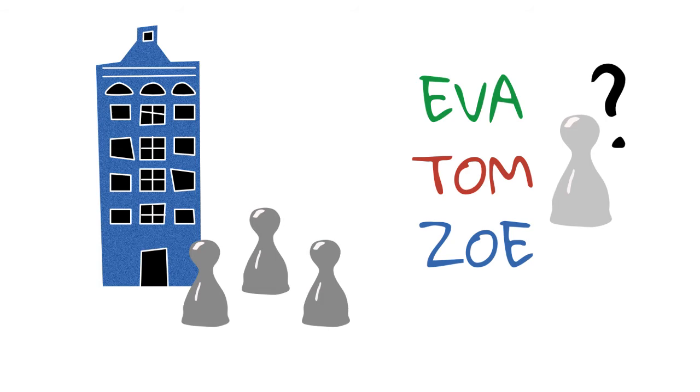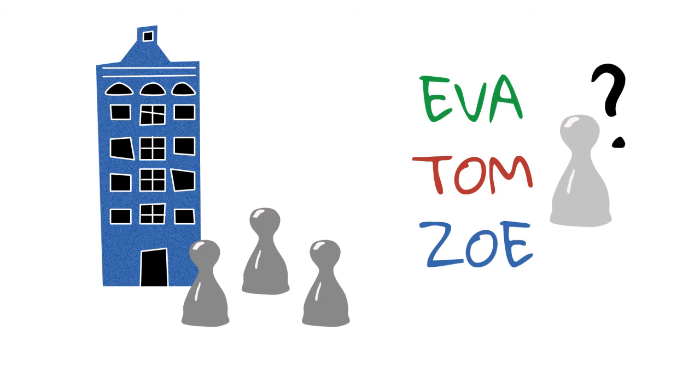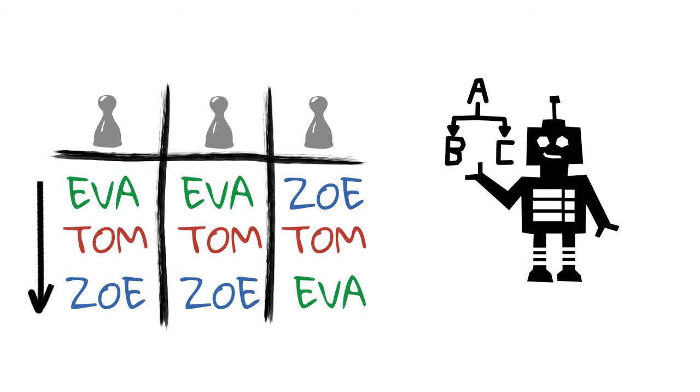Say we have three flatmates who want to choose one out of three applicants, Eva, Tom or Zoe, to move into their shared home. These are the flatmate's preferences. Who should they choose? The flatmates decide to consult an AI program to help with their decision. The program spits out the following line of argumentation.